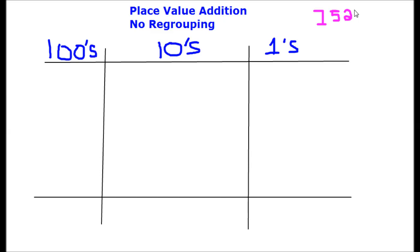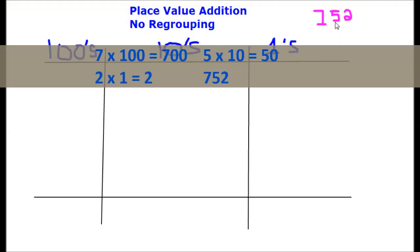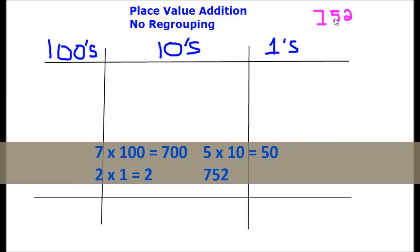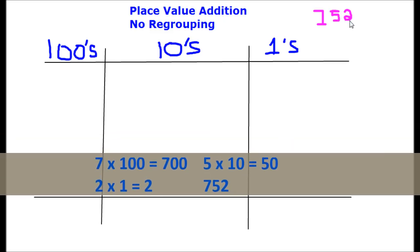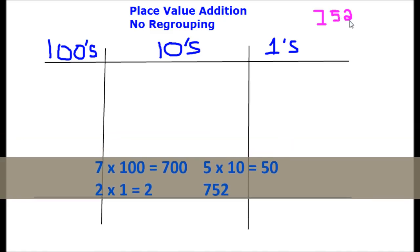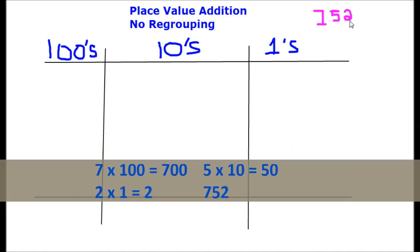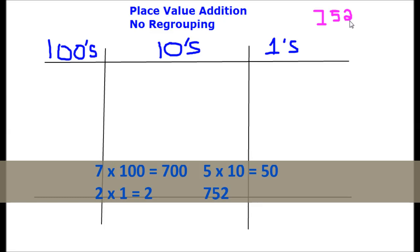For example, 752, if we were to break it apart, it's really 7 times 100, 5 times 10, and 2 times 1. When added together, that gives us 752.